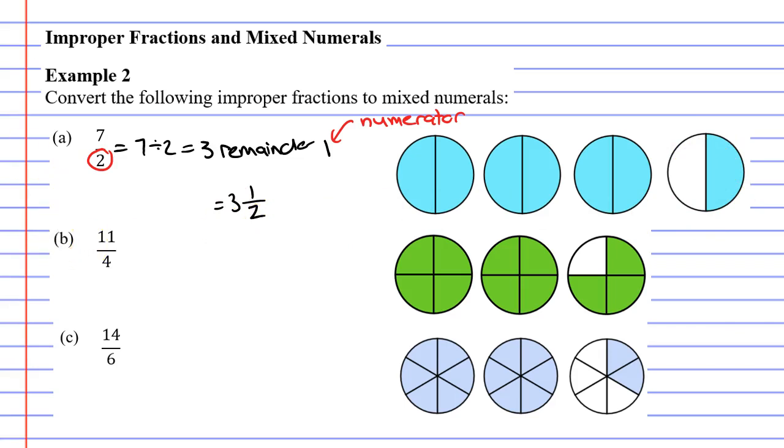Let's now move on to question B. We can rewrite 11 over 4 as 11 divide 4. How many 4s fit into 11? Well 2 fours make 8, and then we get a remainder of 3. We were 3 short of the 11.